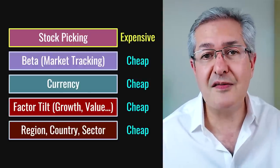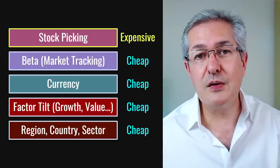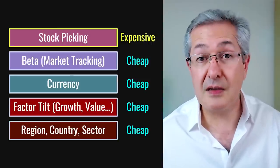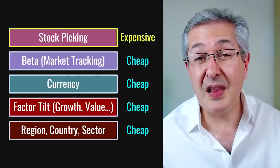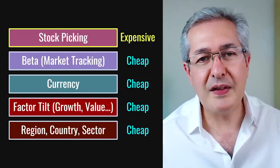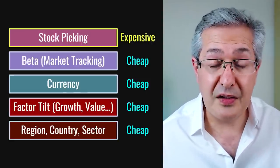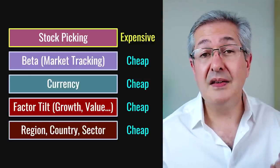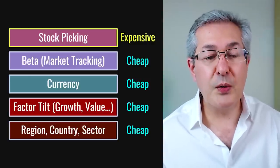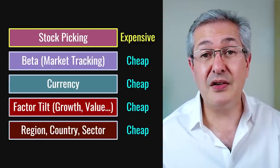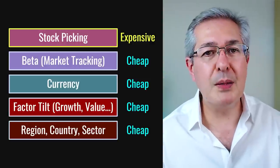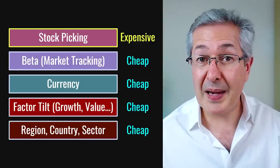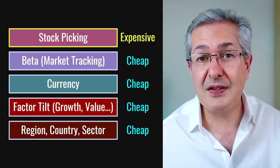It is refreshing to see a fund like Fundsmith do that on a fairly consistent basis long term. But if we did want to reproduce a Fundsmith-like portfolio, the good news is that all of those other factors — things like beta, the currency effect, factor tilts, and regional, country, or sector tilts — can all be reproduced very cheaply with passive funds, often passive ETFs. And that's what we'll be considering in this video.